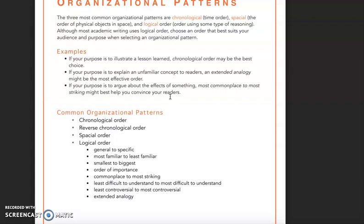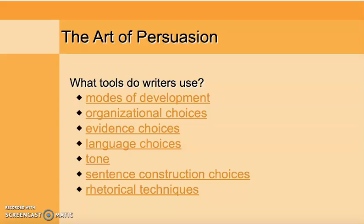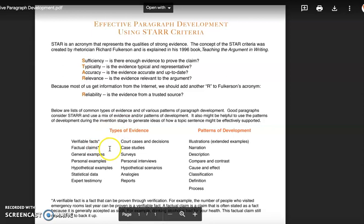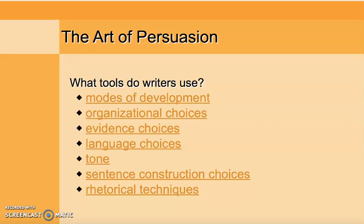So we want to think about identifying the organizational pattern and then think about why the writer chose that particular pattern. Evidence choices — just briefly, I want you paying attention when you're reading to how the writer is supporting the claims. Is the writer using general examples, personal examples, and hypotheticals? Those are more considered soft evidence. Or is the writer using more concrete evidence like statistical data, expert testimony, surveys, or reports? Think about the evidence being used to support the claims.